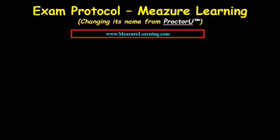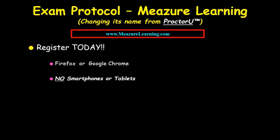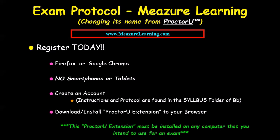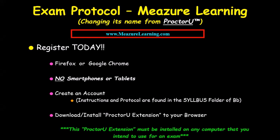For exam protocol using ProctorU: register today. You can only use Firefox or Google Chrome — no smartphones or tablets. Create an account; instructions are in the syllabus folder on Blackboard. You'll need to download and install the ProctorU browser extension on any computer you intend to use for an exam. If you plan to use a different computer for a later exam, you must install it on that computer as well. It is a 24/7 proctoring service that CCM uses.